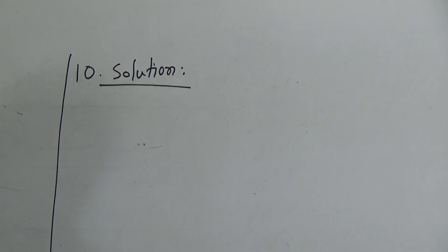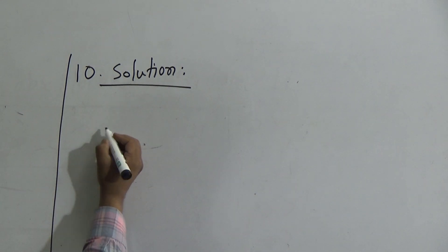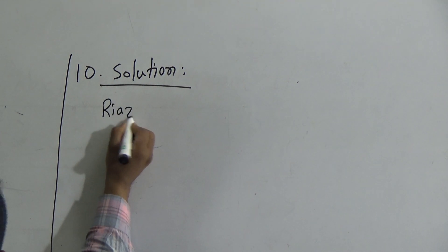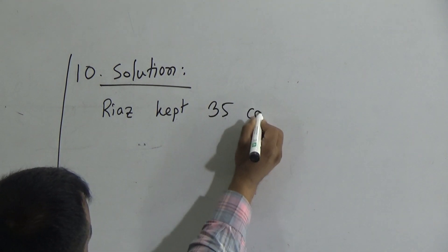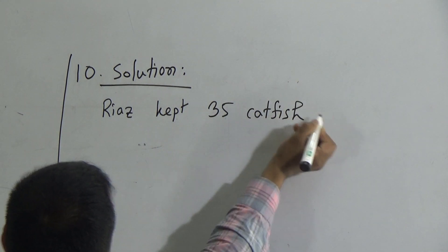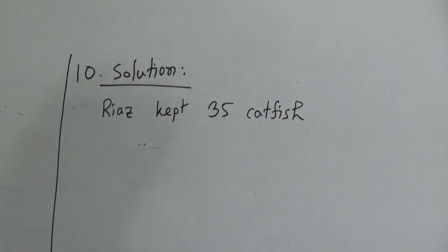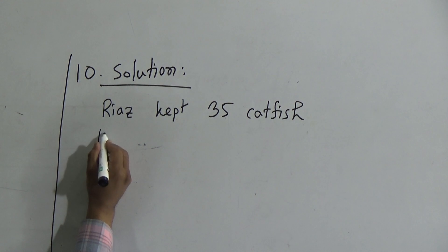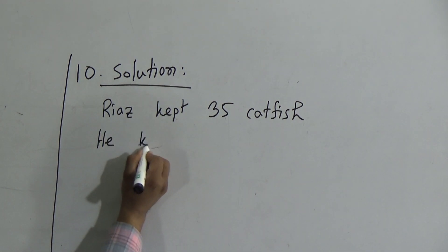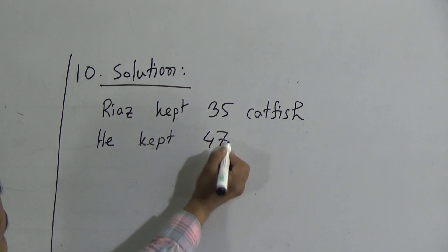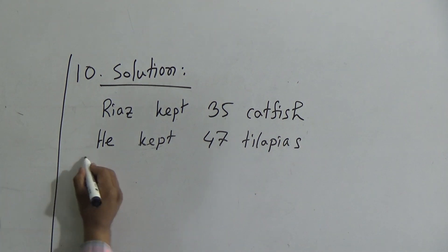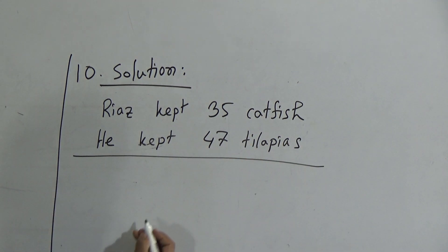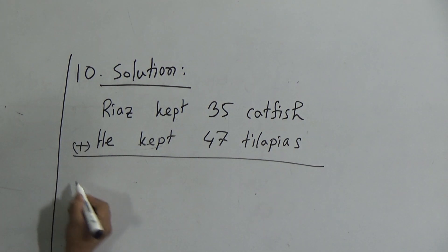How many catfish are there? Riyaz kept 35 catfish. Write down: Riyaz kept 35 catfish. And also he kept 47 tilapias. Write down: he kept 47 tilapias. These two — catfish and tilapia — are the fish names. Now we should add them to calculate the total number of fish in the tank. Give the addition sign first, then we add.